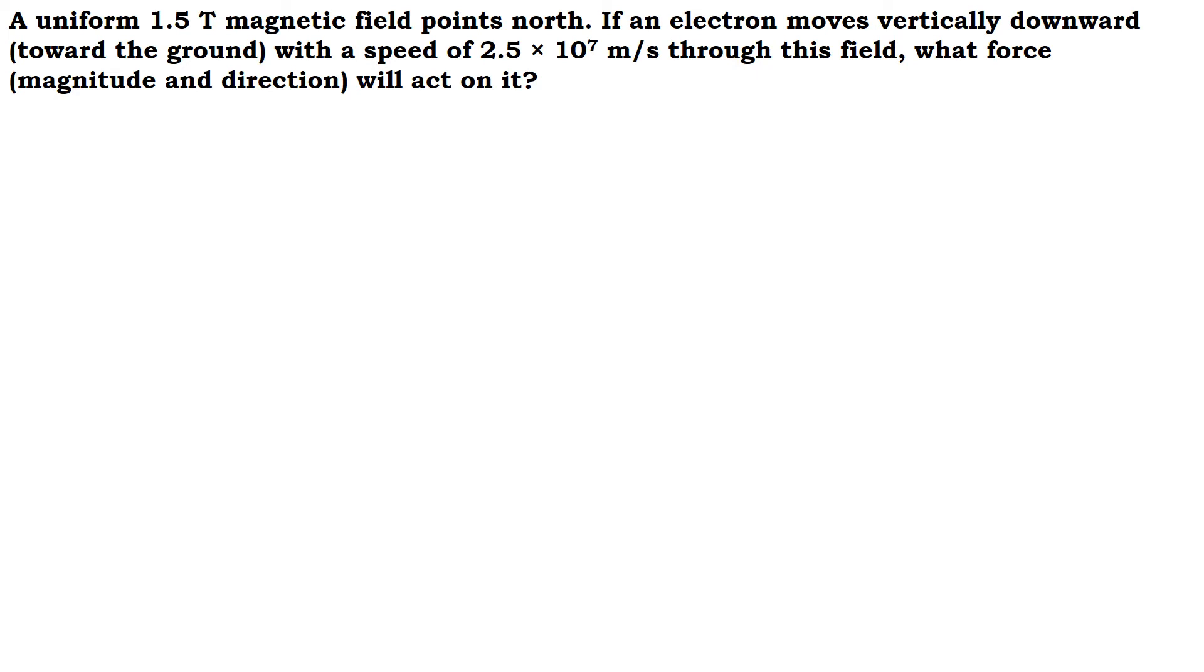A uniform 1.5 Tesla magnetic field points north. When they mention a uniform magnetic field, they are talking about a magnetic field that is constant in magnitude and does not change its direction. So the magnetic field B is given as 1.5 Tesla pointing north.